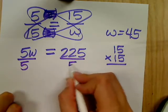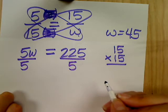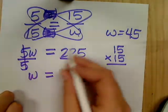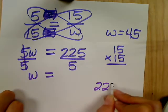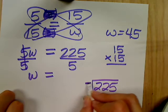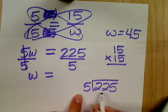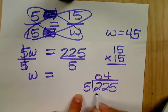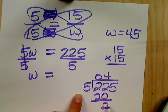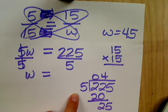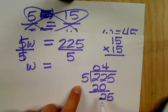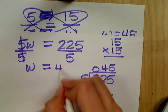5 over 5 is 1W. And then we need to do this division here. 5 goes into 2, 0 times. But 5 into 22 is 4 times. Which is 20. I don't know. Maybe we'll have to go back and check. Let's finish this though. 5 into 25 is 45. So W equals 45.